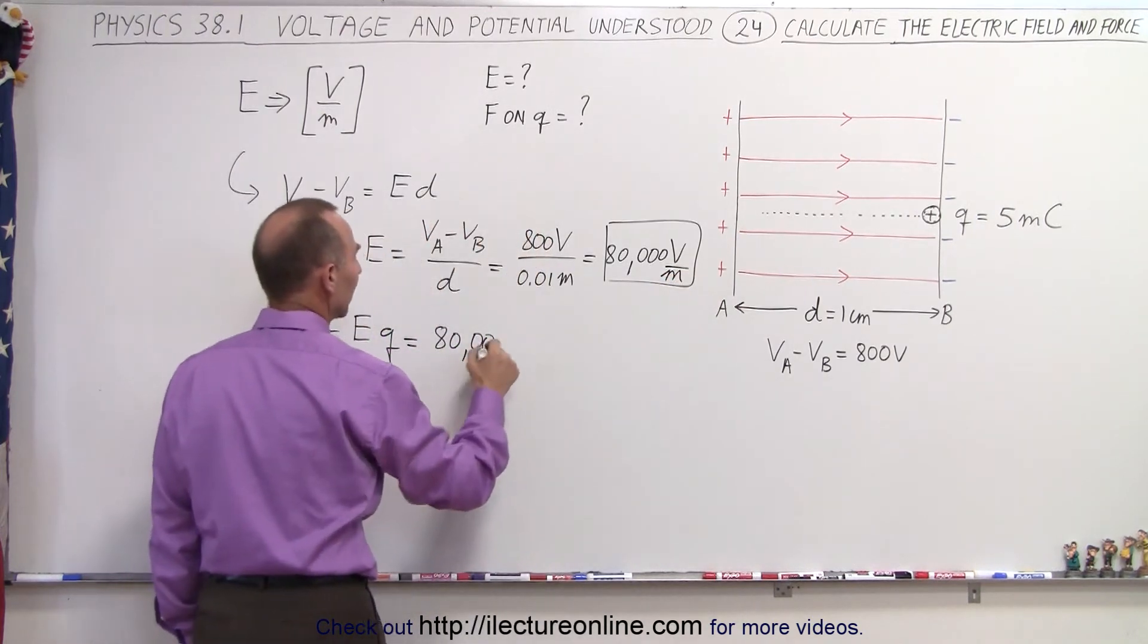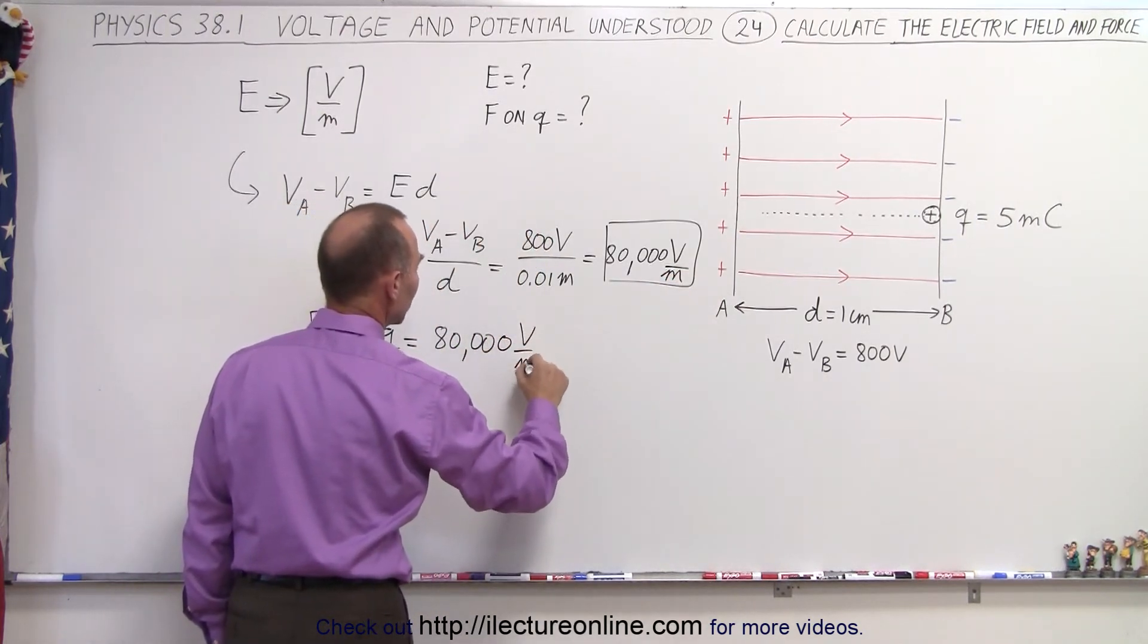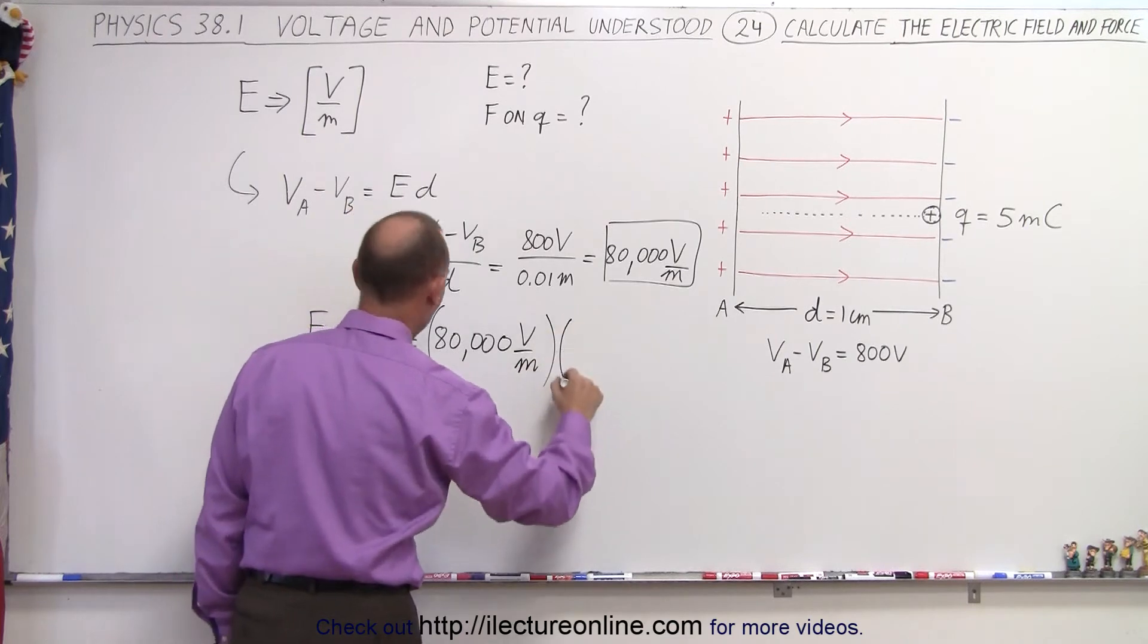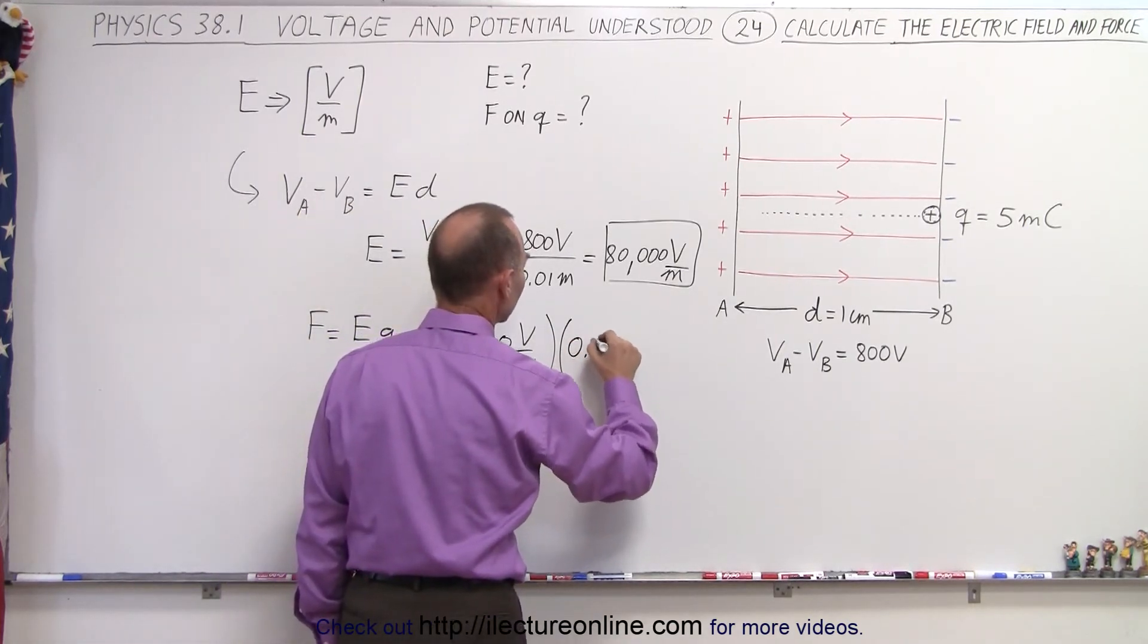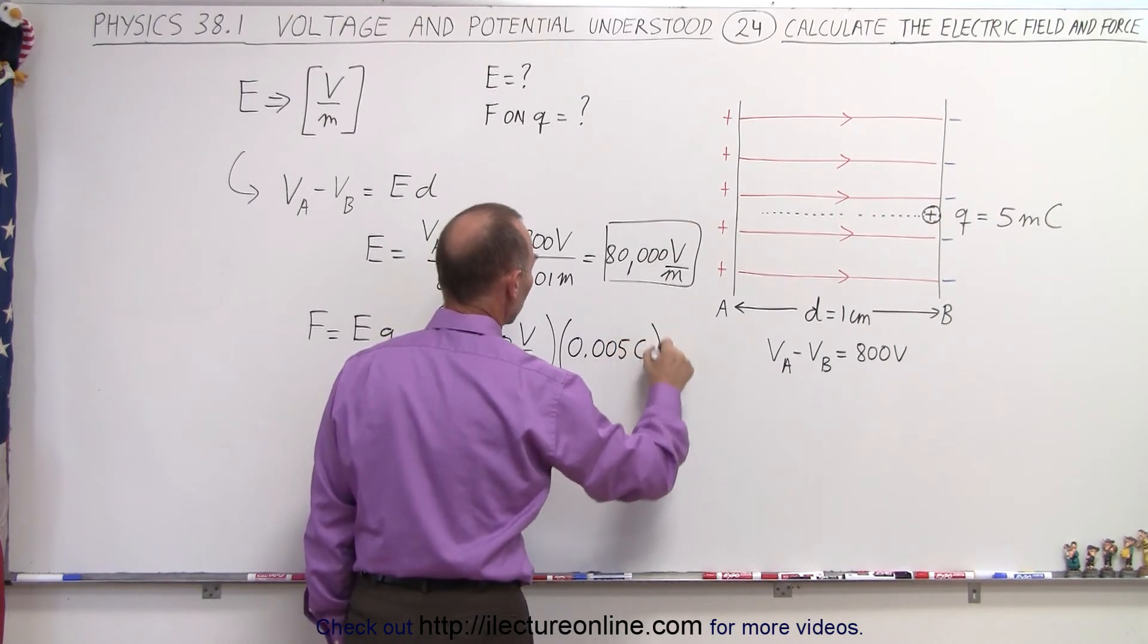Can't forget the per meter, so 80,000 volts per meter multiplied times Q, and Q will be 5 millicoulombs at 0.005 coulombs.